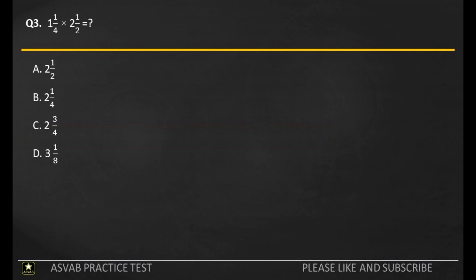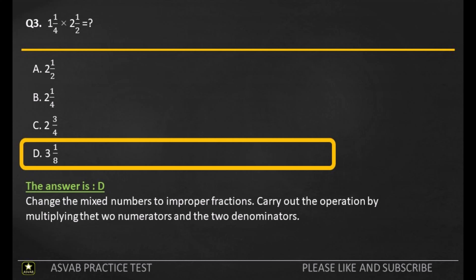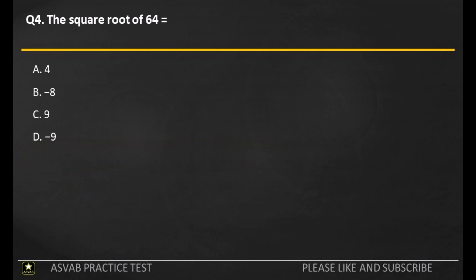Q3. A. B. C. D. The answer is D. Change the mixed numbers to improper fractions. Carry out the operation by multiplying the numerators and the two denominators.